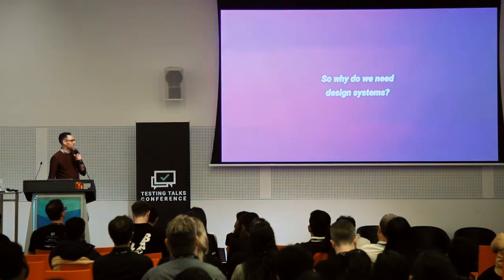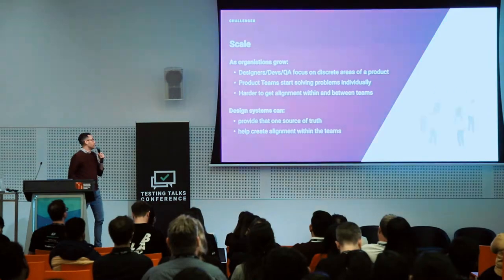So why do we need design systems? Let's look at the challenges facing product teams today. One challenge is scale. As organisations grow, you have more product teams working on smaller things — maybe at Google someone's just working on the header. When you have more product teams, it's hard to get alignment not only within them but between them. Design systems provide that one source of truth — designers use the components, devs code in a certain way, and QA test against that one source of truth.